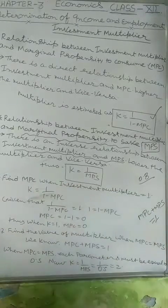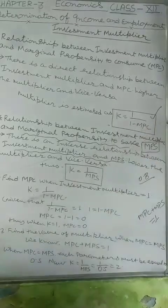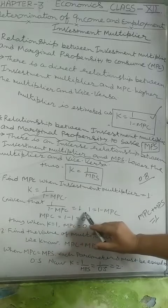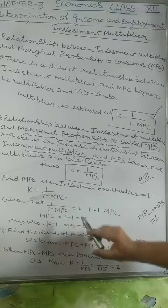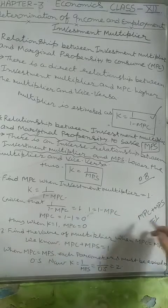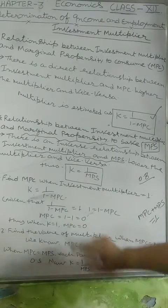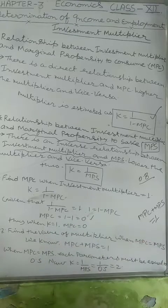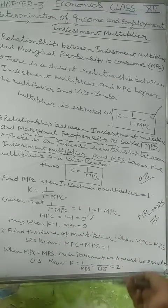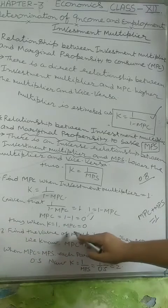Example: Find MPC when the investment multiplier K equals 1. Using the formula K = 1 / (1 − MPC), given K = 1: 1 / (1 − MPC) = 1, therefore 1 − MPC = 1, so MPC = 0 and MPS = 0. Thus when K = 1, MPC = 0.